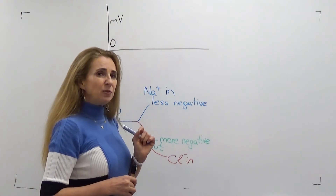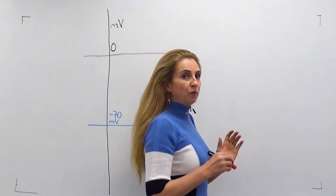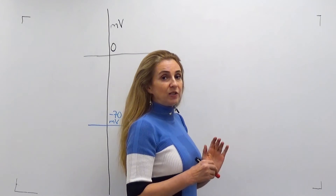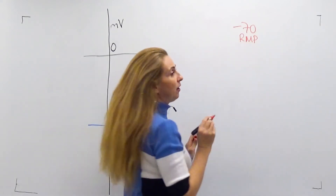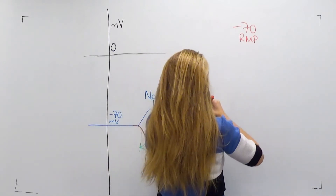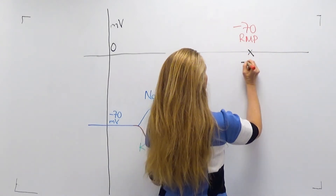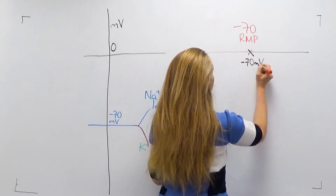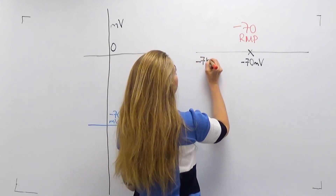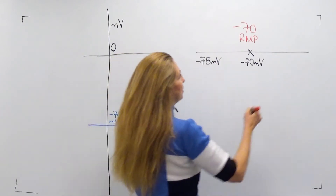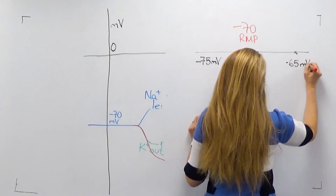Let's go into the details of what happens with chloride. For a cell with a resting membrane potential of minus 70 millivolts, there are three possibilities. The chloride equilibrium potential can be equal to minus 70 (exactly the resting membrane potential), more negative than the resting membrane potential, or less negative than the resting membrane potential.